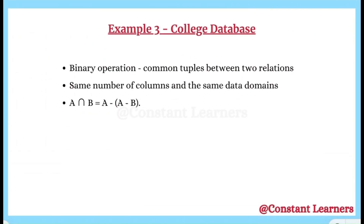To summarize: intersection operation is a binary operation requiring two relations, and only the common tuples appear in the output. Both relations being intersected must have the same number of columns and the same data domains. Also, A intersection B can be represented using set difference as the first relation minus (first relation minus second relation). I hope this video helped you understand the concept of intersection in relational algebra. If you enjoyed it, please give it a thumbs up and subscribe for more content. Thank you for watching.